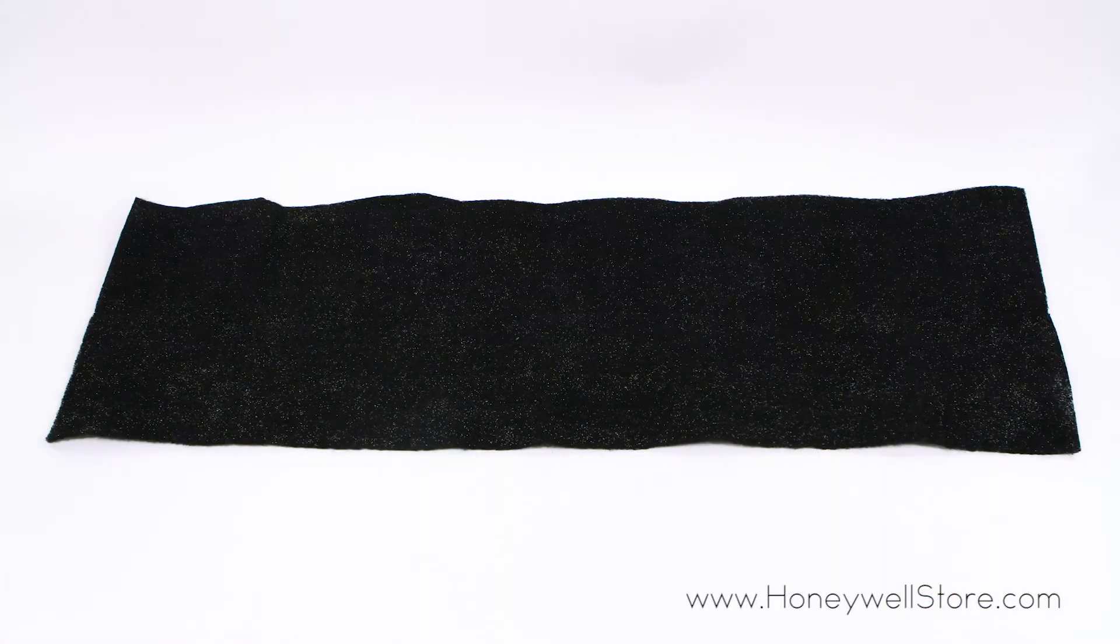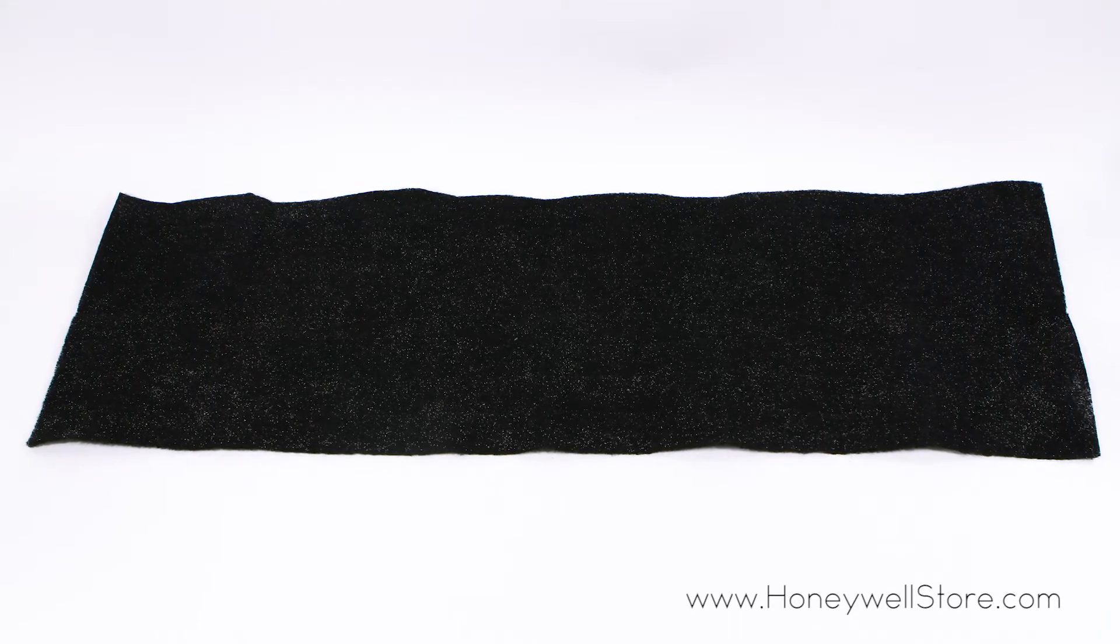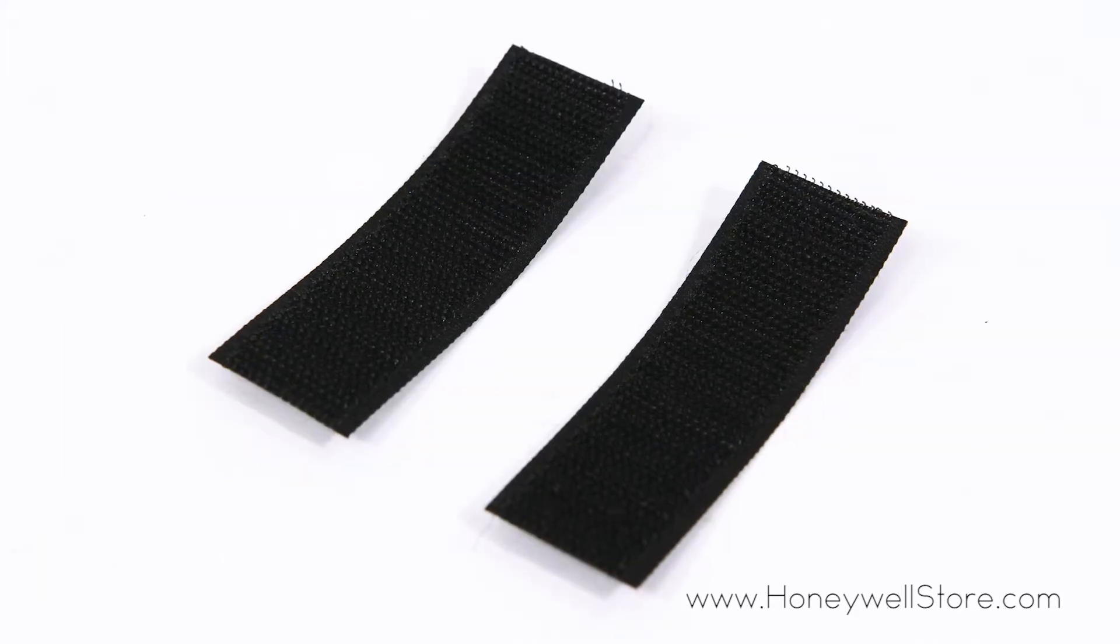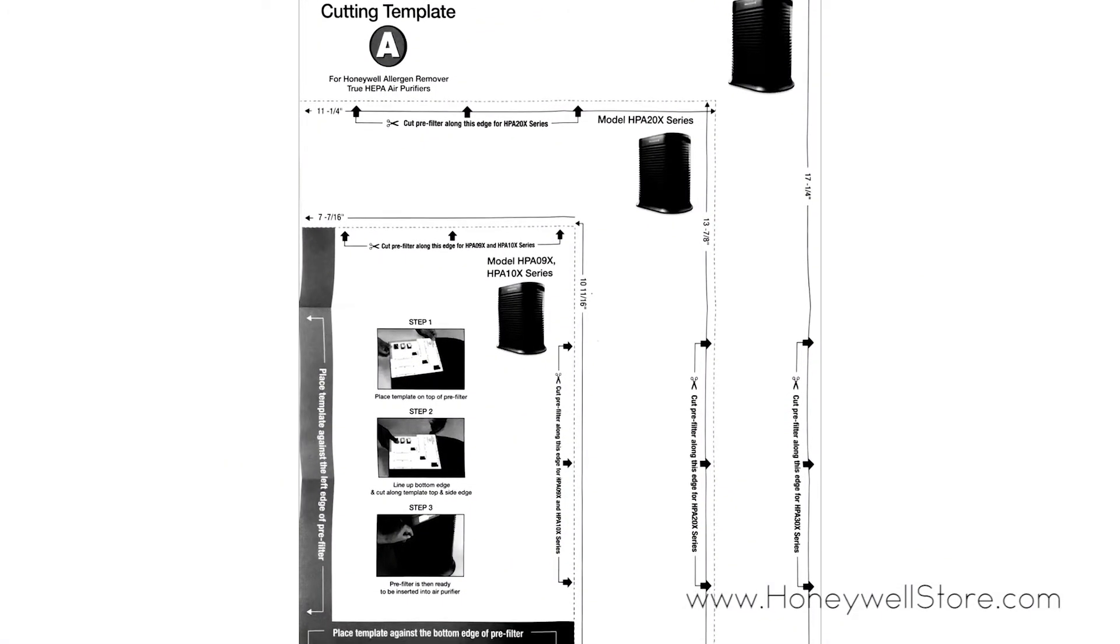Inside the box you'll find one 15.5 x 0.13 x 47 inch carbon pre-filter, two velcro straps and a cutting template to size your pre-filter to your desired model of Honeywell air purifier.